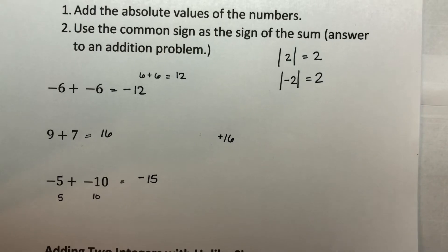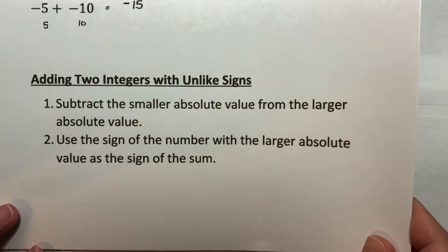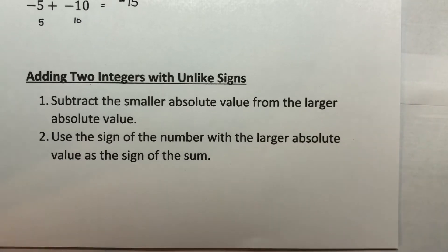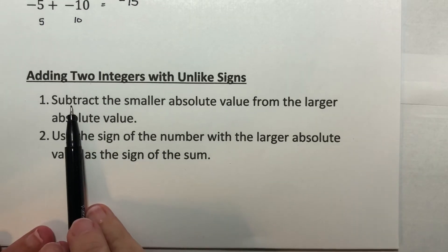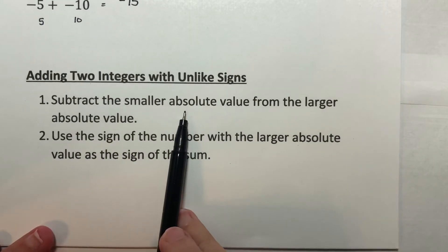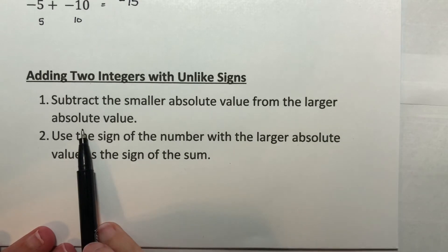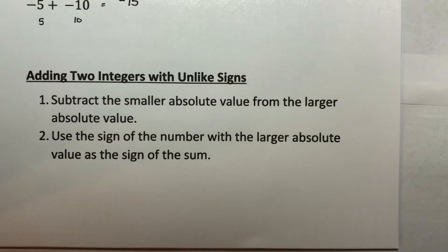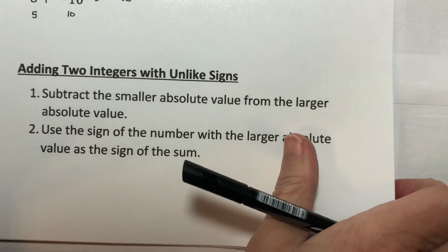Okay, now what do we do if we're going to add two things with unlike signs? So we are adding a positive and a negative or negative and a positive, doesn't matter which way it goes. What we do is we subtract the smaller absolute value from the larger absolute value. And then we're going to use the sign of whichever one was larger, whichever absolute value was larger. That's the sign that we're going to use for our answer.